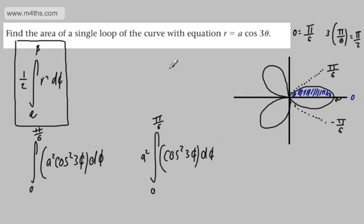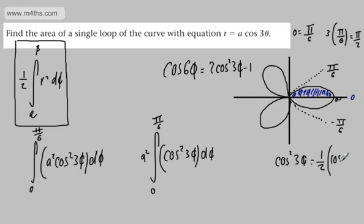I know if I have cos 6θ, that's going to be equal to 2 cos² 3θ - 1. So rewriting this by adding 1 to both sides and dividing by 2, I can say cos² 3θ is going to be equal to 1/2 the quantity of cos 6θ + 1.